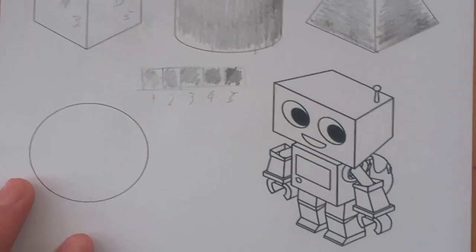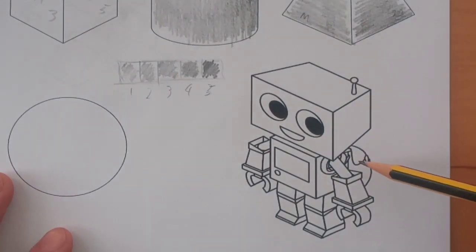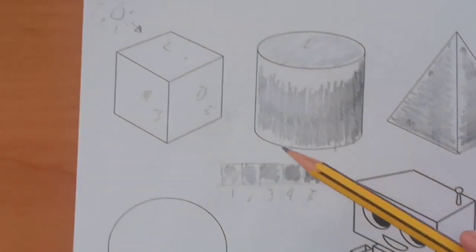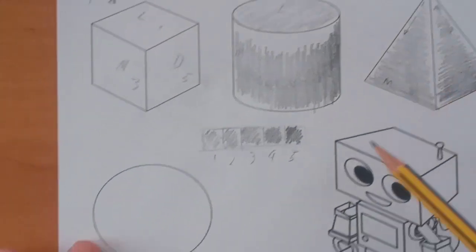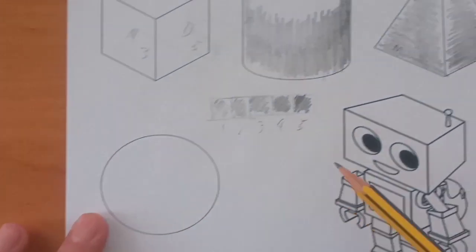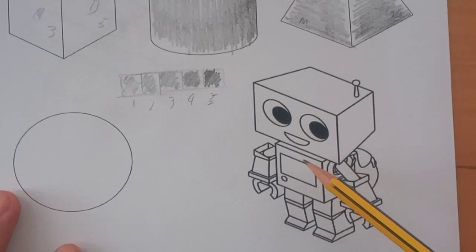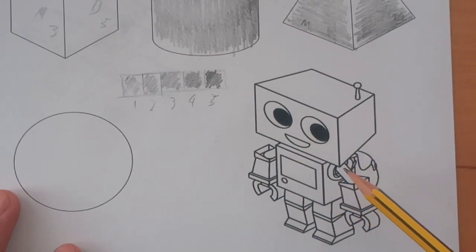So once you've completed all the basic shapes, you can have a go with the little robot at the bottom. Again, using the skills you've learned from the other shapes, from the square, cylinder, pyramid and the circle, you would then be able to do a fully rendered drawing of the robot.